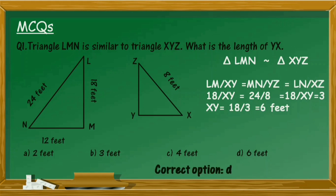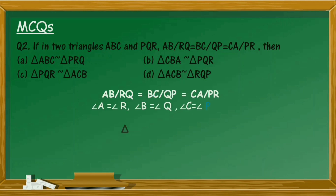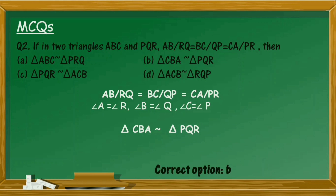Question 2: If in two triangles ABC and PQR, AB/RQ equals BC/QP equals CA/PR, then choose the correct option. Since the sides are proportional, we identify which vertices correspond: angle A equals angle R, angle B equals angle Q, and angle C equals angle P. Therefore, the correct option is option B — triangle CBA is similar to triangle PQR.